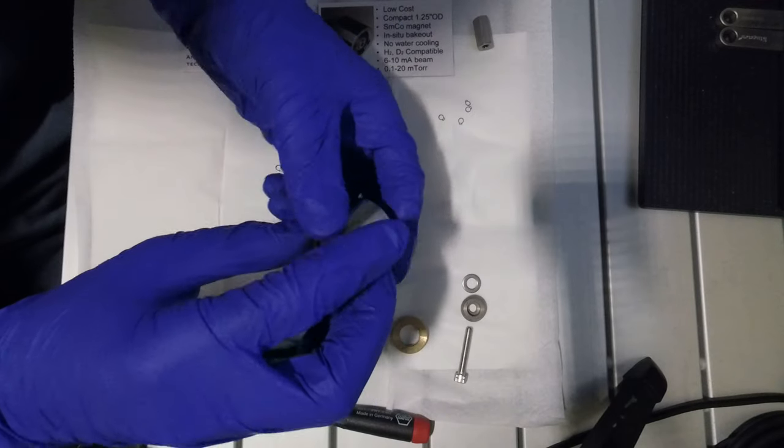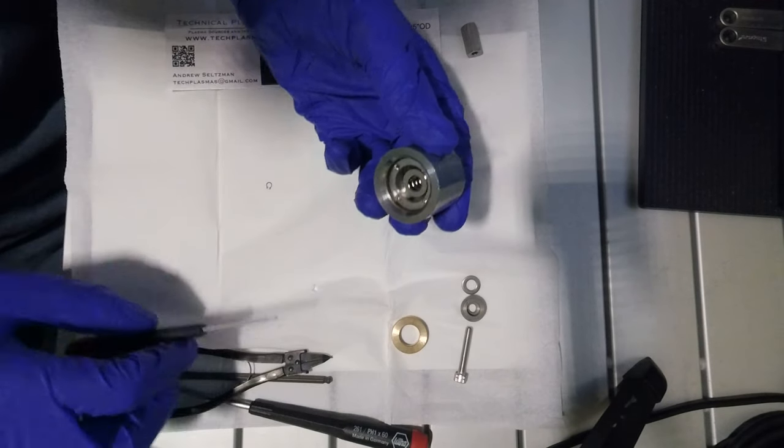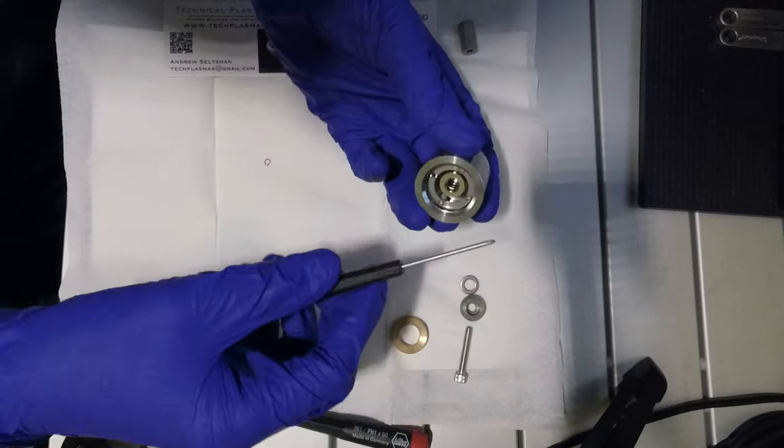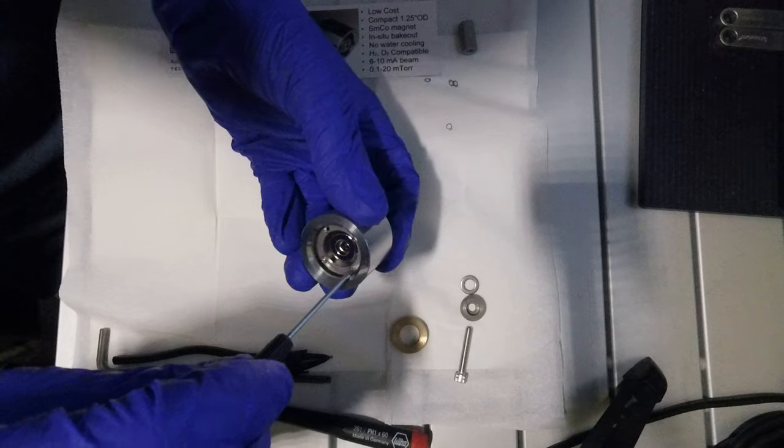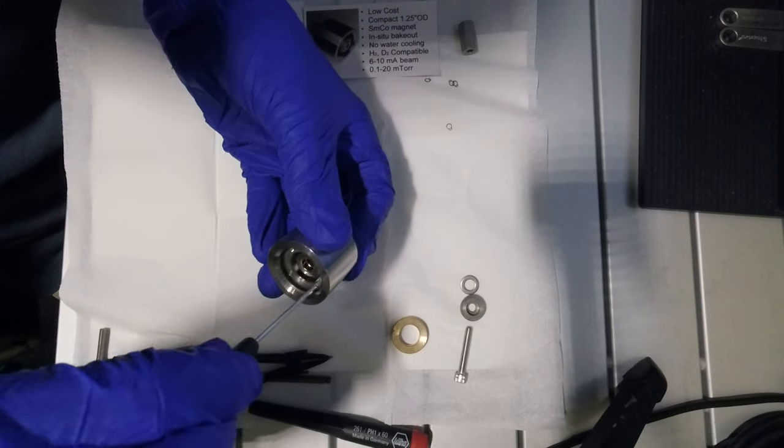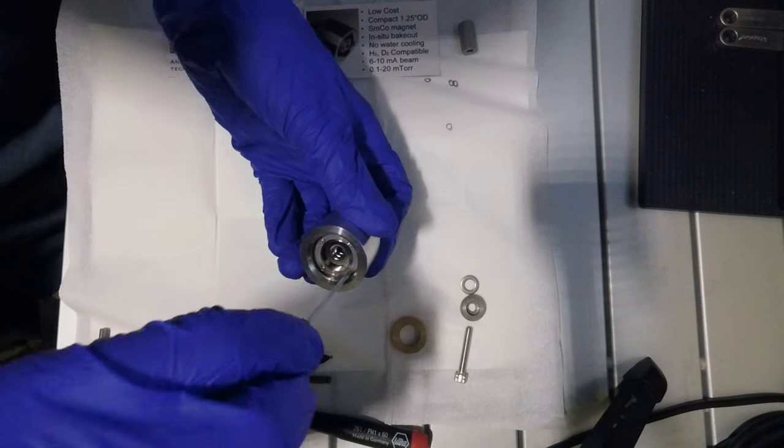The anode ring is now retained within the ion source. Using a size 00 Phillips screwdriver, tighten each screw down. A wrench is not required as the friction from the aluminum ceramic insulator securely holds the nut in place.